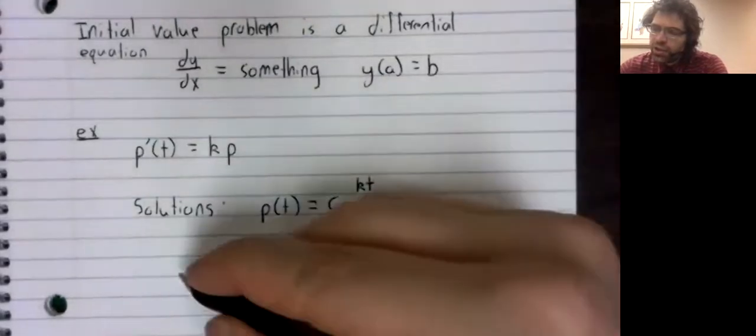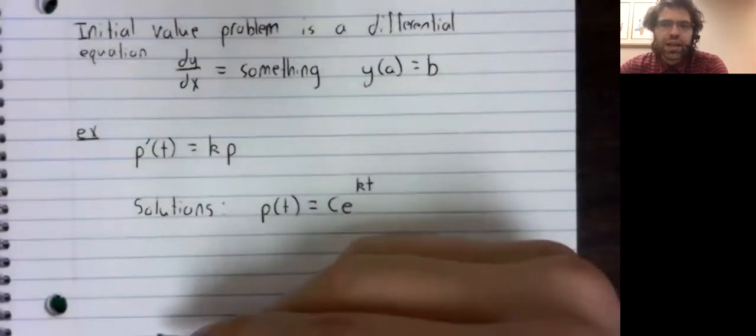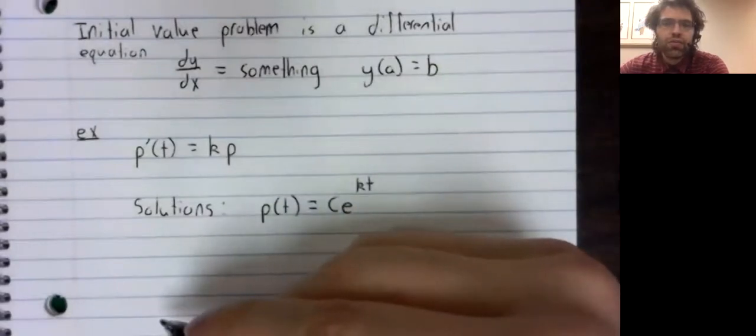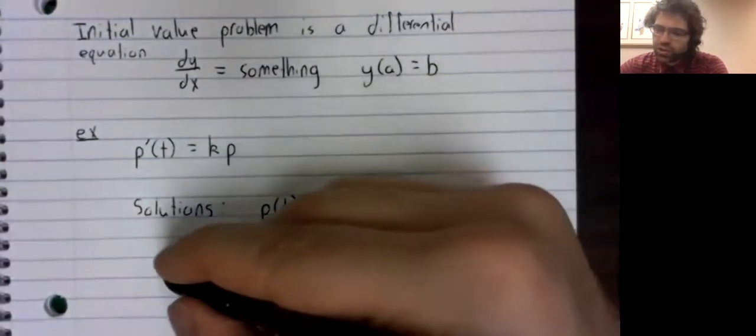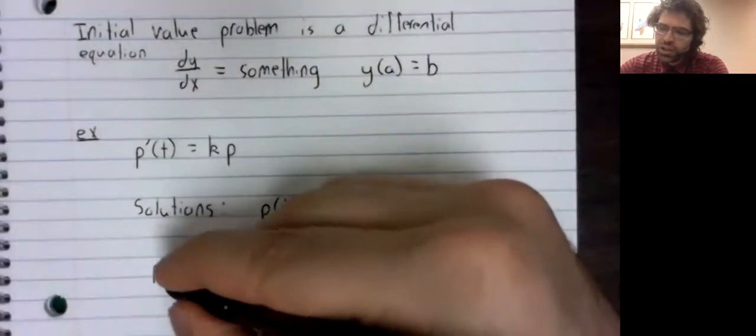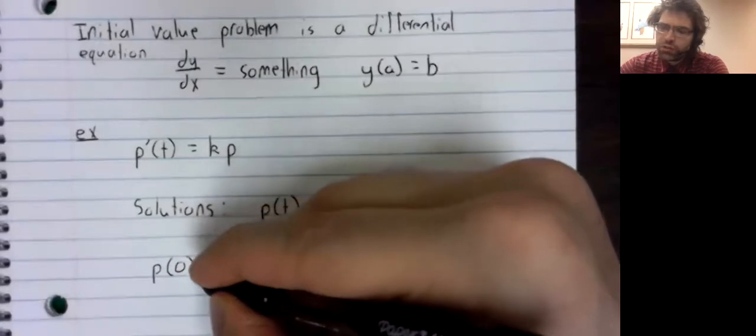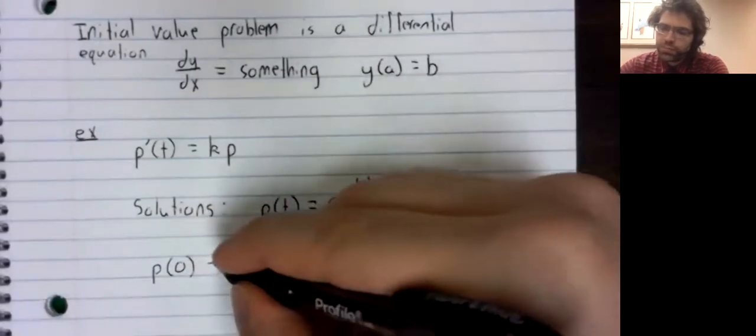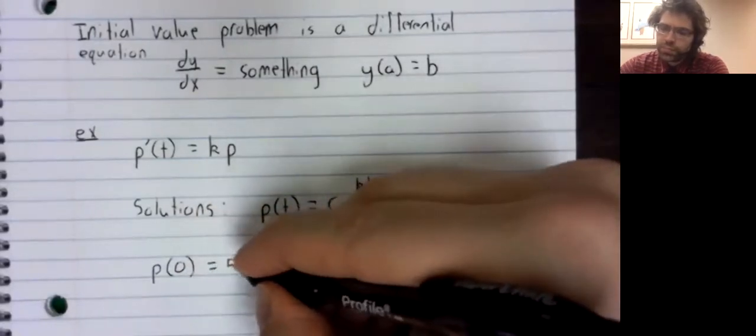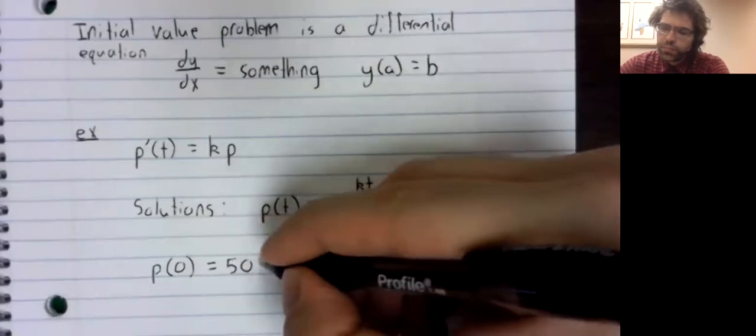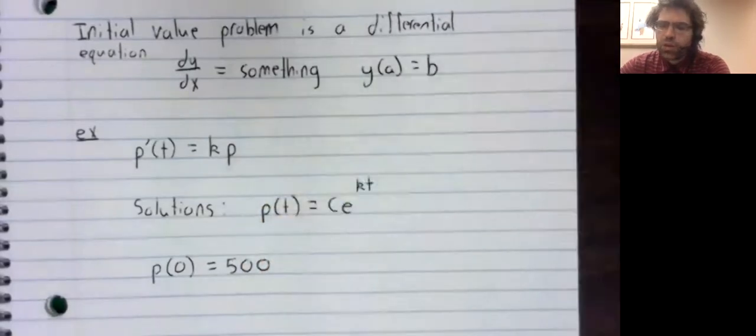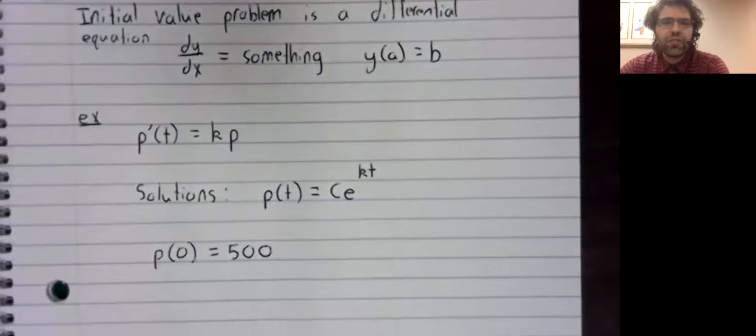And let's now add an initial value. Let's say that p of zero equals 500.